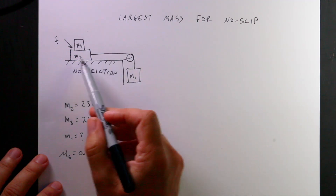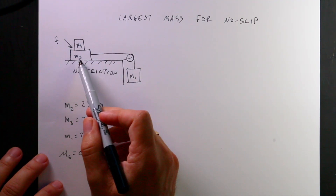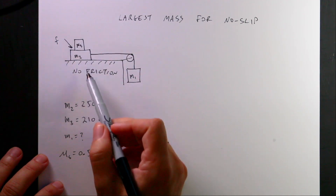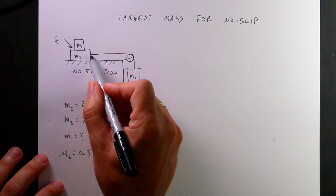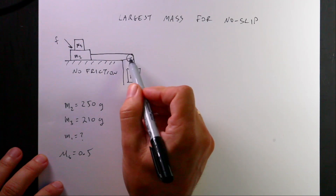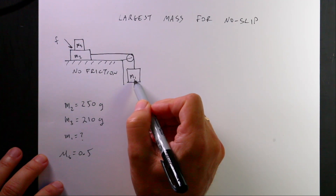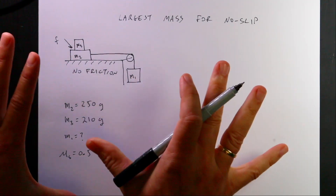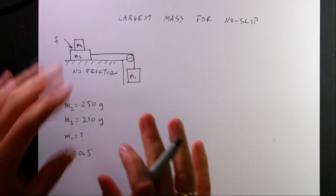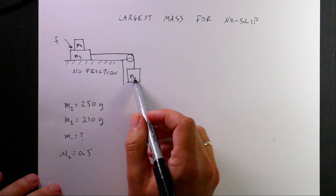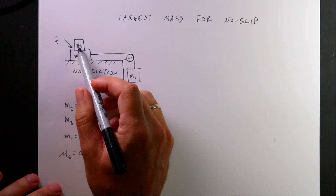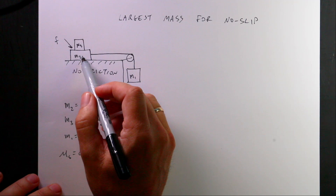On that table there is a block — I'm calling that mass 2. And on top of that, there's another block, mass 3. There's a string connecting mass 2 over a frictionless massless pulley connected to mass 1 hanging down below. So I'm going to let this go and these are going to slide. The question is: how large of a mass can M1 be so that M3 doesn't slip off of mass 2?